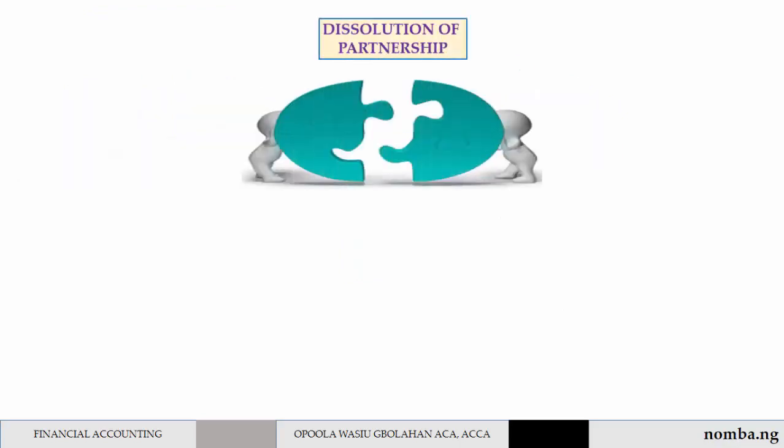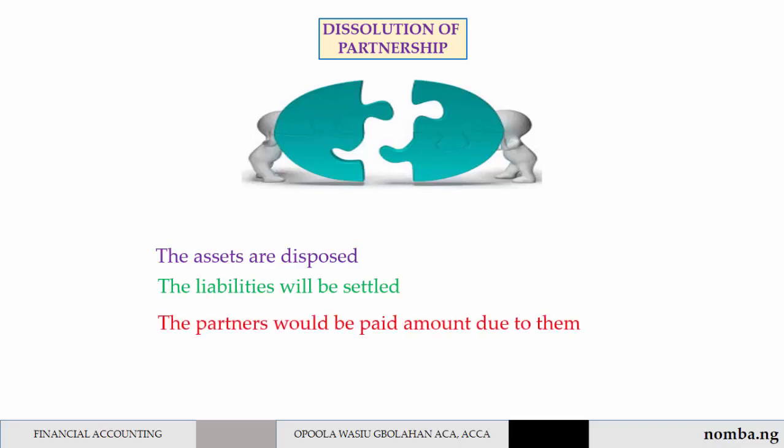Upon dissolution, the partnership firm stops trading, and thereafter they will sell the assets of the business. The liabilities of the firm will be settled, while the partners will be paid their final amount due to them on their capital account. After all this, the partnership is said to be dissolved.